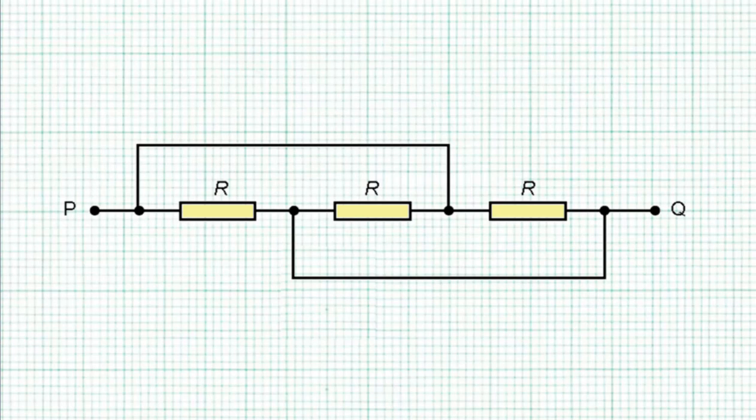Alright, so we are supposed to work out the resistance between point P and point Q. Imagine you are some charges and you are trying to make your way from point P to point Q. Point P is at a higher potential than point Q. So it's like you are trying to make your way from a higher floor to a lower floor.